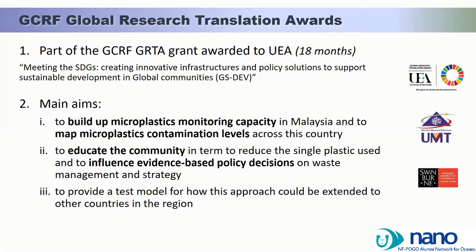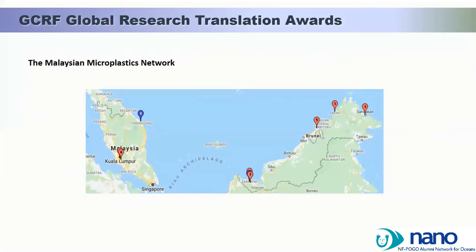The GRTA microplastic project is part of the UEA GRTA project together with three other sub-projects: child malnutrition, sustainable food system, and family literacy, together with Swinburne University in East Malaysia and UMT in West Malaysia. This GRTA microplastic project aims to build microplastic monitoring capacity in Malaysia, map microplastics across the country, educate the community, and provide evidence-based data for policy makers. Universities and NGOs have formed the Malaysia Microplastic Network — those working on microplastic research in Malaysia are welcome to contact us and join.